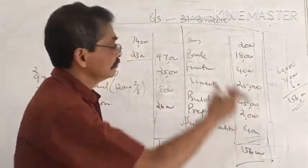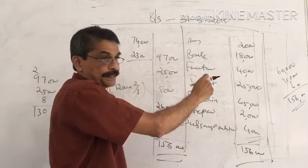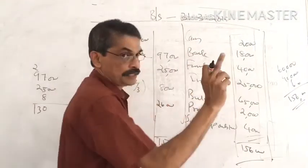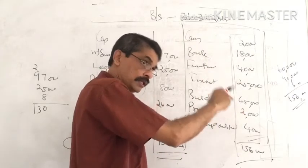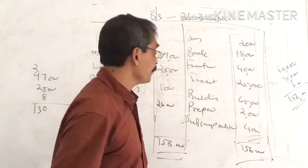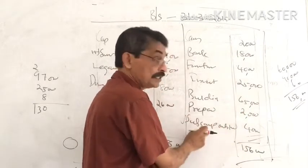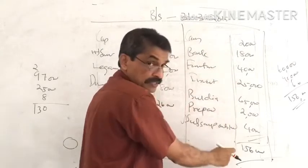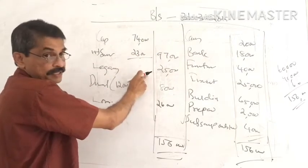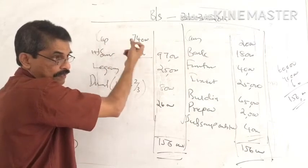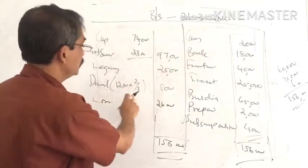The closing balance sheet as on 31st March 2018 includes: closing cash balance, bank balance, furniture after depreciation, investment, and building. Prepaid insurance is shown as a current asset. The legacy goes to the capital fund. The donation is split: one-third to income and expenditure account and two-thirds to the capital fund on the liability side.